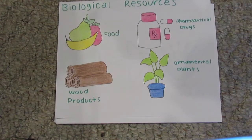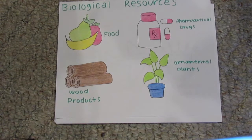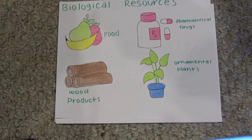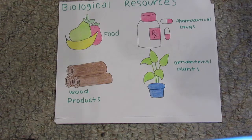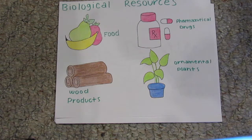Biological resources include food, medical resources and pharmaceutical drugs, wood products, ornamental plants, breeding stocks, population reservoirs, future resources, and diversity of genes, species, and ecosystems.